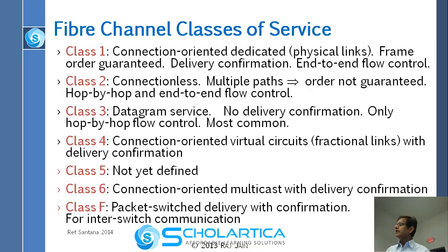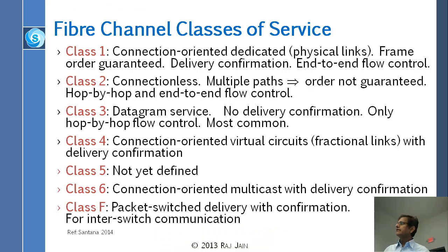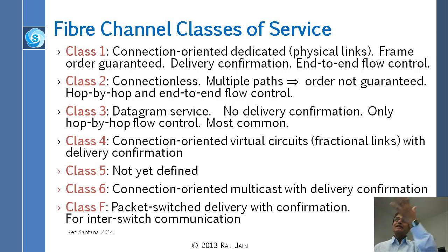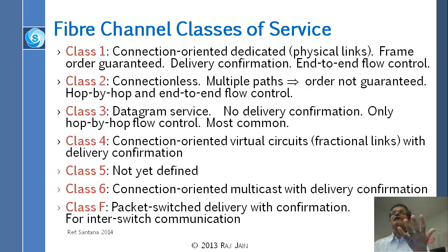Because they have Class F, they probably have four bits for the classes, going from zero to F — sixteen classes. In Ethernet, priorities have been replaced by classes, and there we have eight classes.